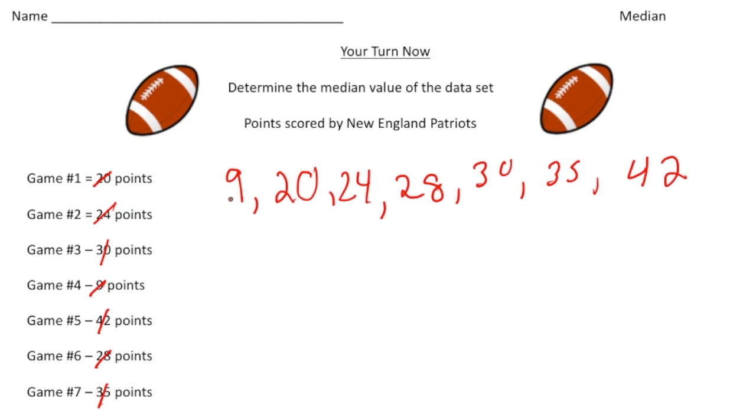Now let's count how many games we have. We have one, two, three, four, five, six, seven games, which makes this a little bit easier because we're gonna have one exact number for our median. So I'm going to actually use different color to make it a little more obvious. So I'm going to cross off the ends. So I'm going to cross off the nine, the 42, and then the 20 and 35, the 24 and 30. And what's left over right here, 28, that is the median value for our answer. All right. How'd you do?